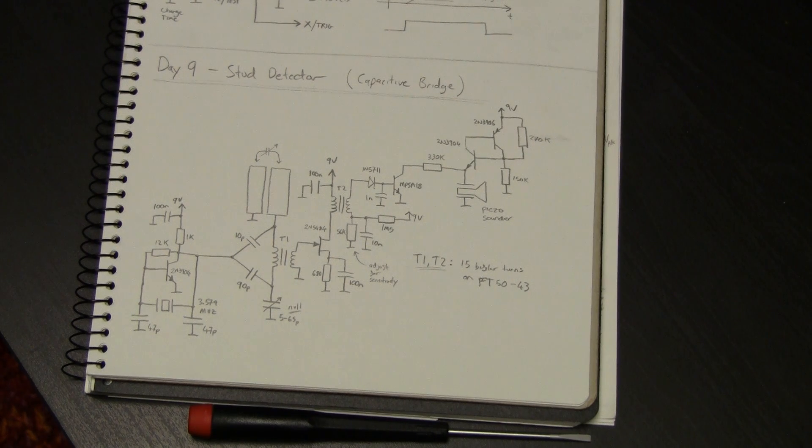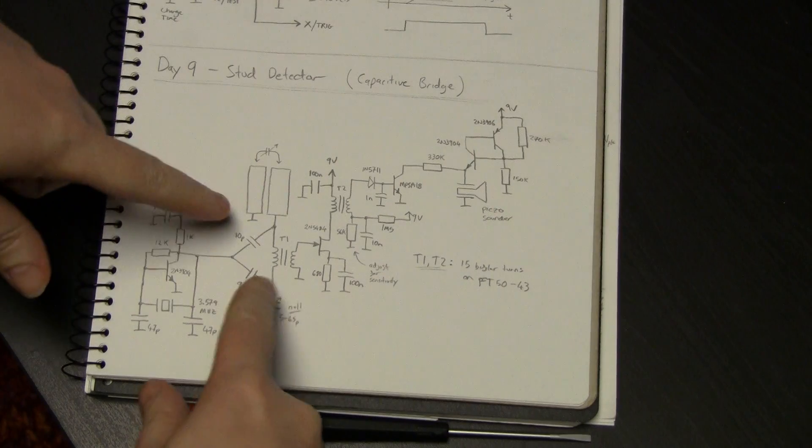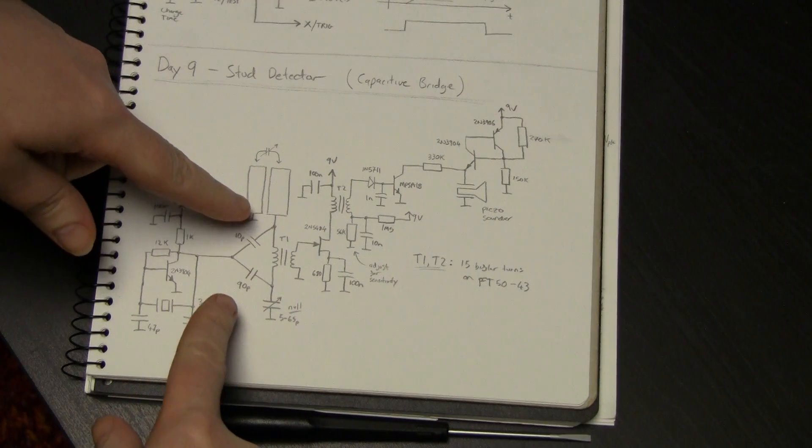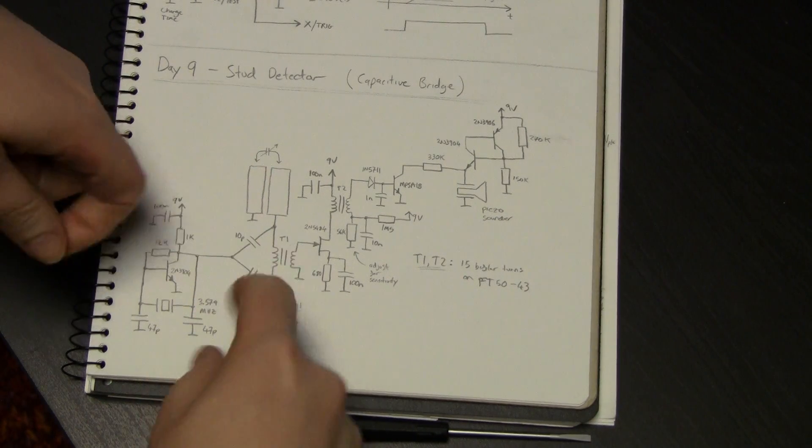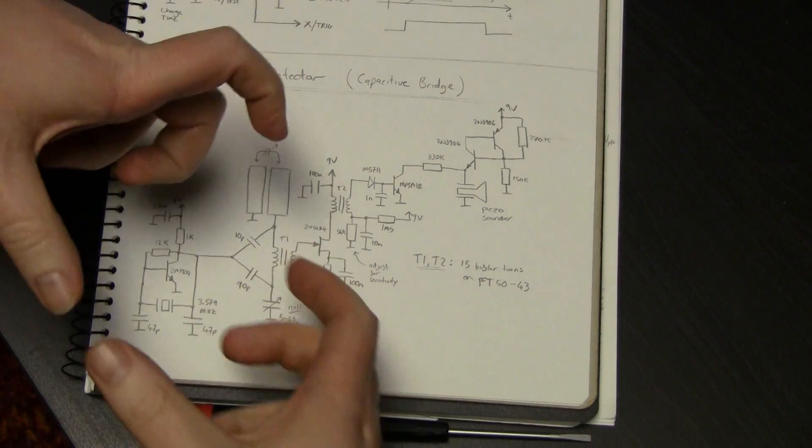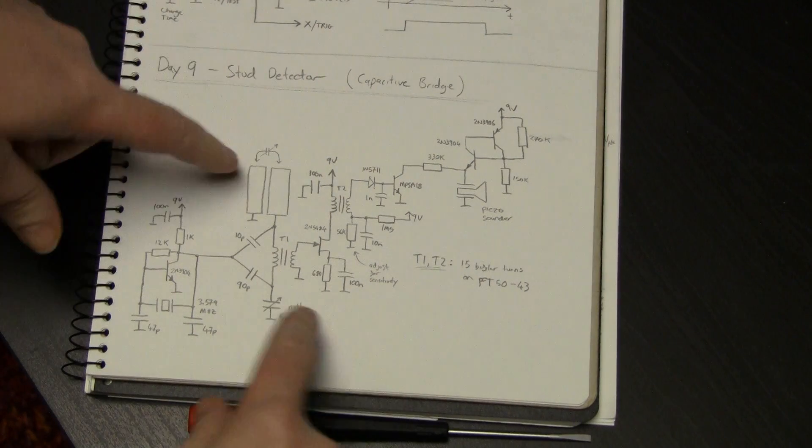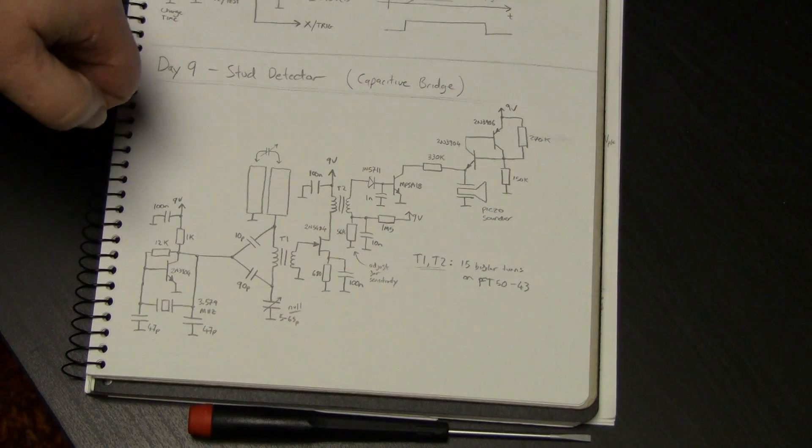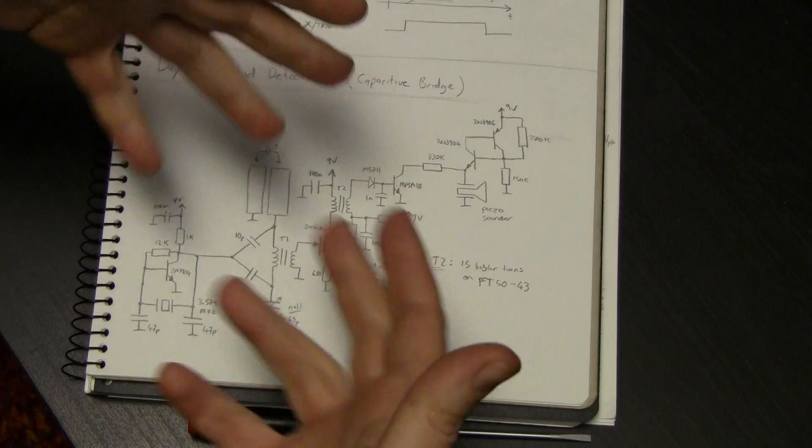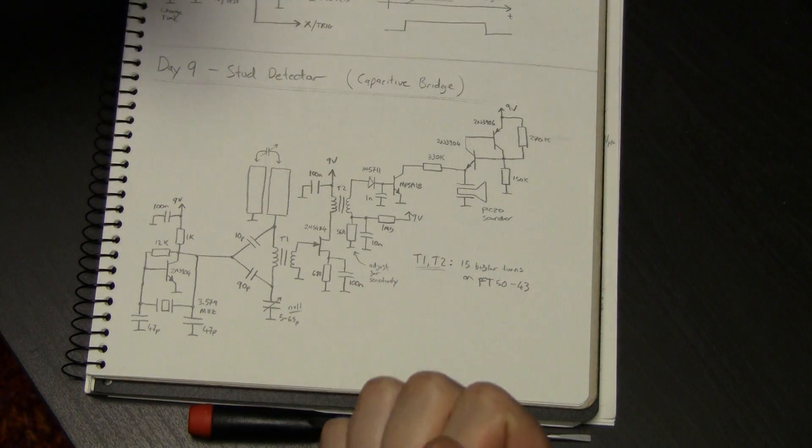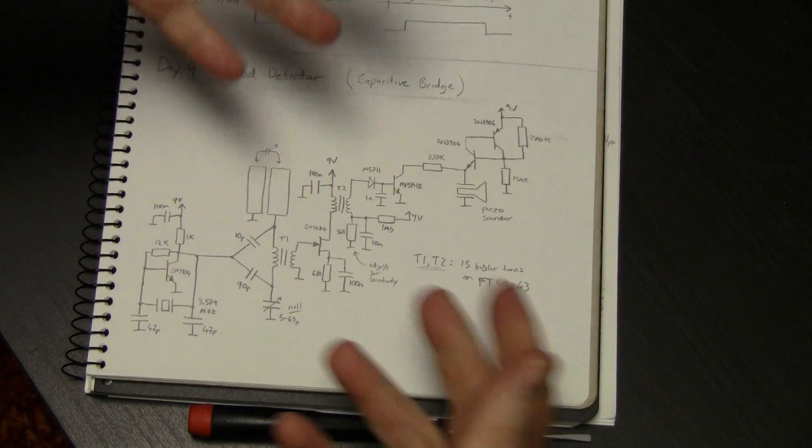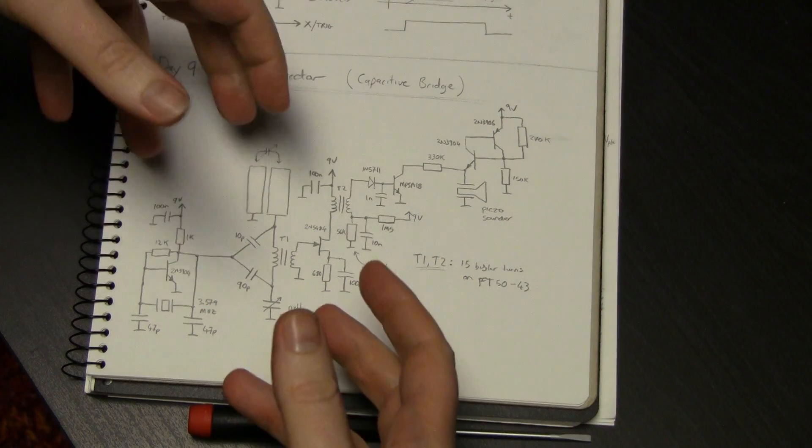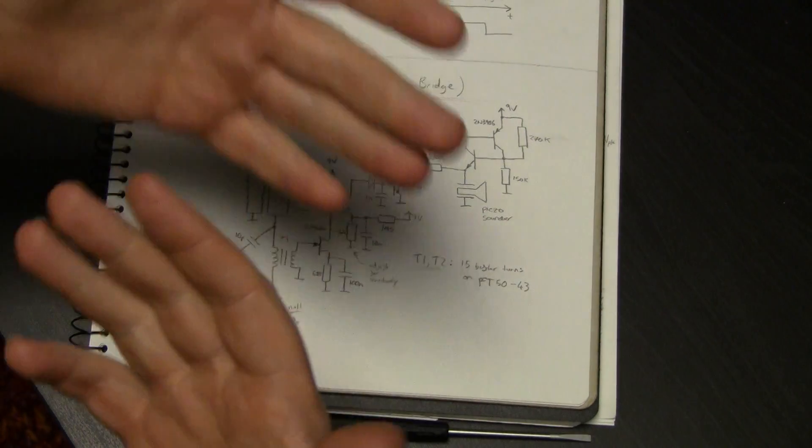Like a Whitestone bridge, it uses the ratio of two pairs of capacitors and a transformer which picks off the signal at the centre of the bridge to match the ratio of the two arms of the bridge. What it's actually doing when acting as a stud detector is measuring the dielectric constant of the material around the stud detector.